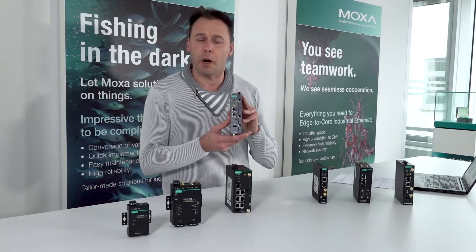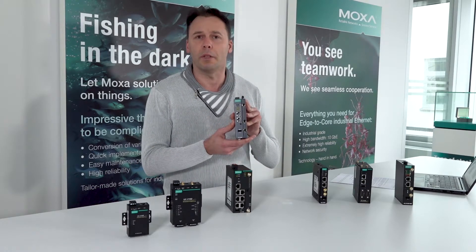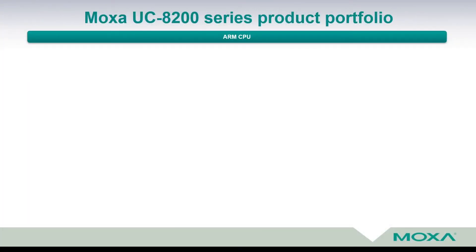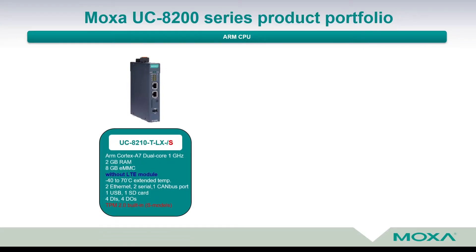Let's see the real representatives of the powerful UC8200 series. From Moxa's UC8200 series product portfolio come two different models. The first model is the UC82110-T-LX-S. A key property of the UC82110 is that it does not have an LTE module built inside.